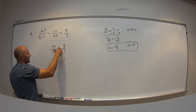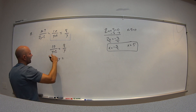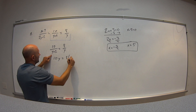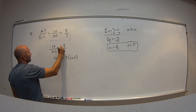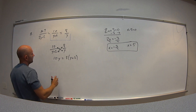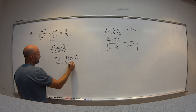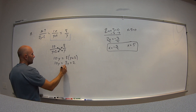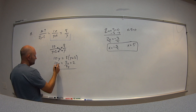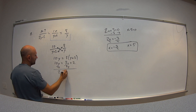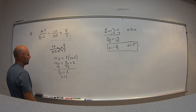Looking at 10 over y plus 2 equals 8 over y, I cross multiply and solve for y. I get 10y equals 8 times y plus 2. Distributing: 10y equals 8y plus 16. Subtracting 8y from both sides gives 2y equals 16, so y equals 8.